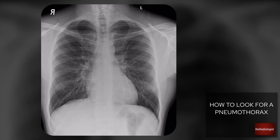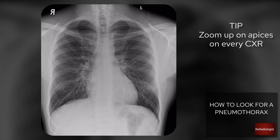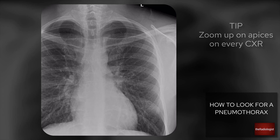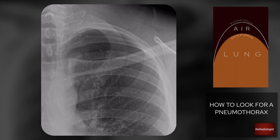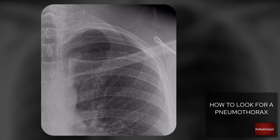Today we're going to look at how to identify a pneumothorax on a chest x-ray. The most important place to look is the lung apex — I don't consider a chest x-ray fully assessed until I've zoomed right up on the apices. In a pneumothorax, gas sits in the lining of the lung between the visceral and parietal pleuras, and when the patient is sitting or standing, that gas rises to the top of the lung.